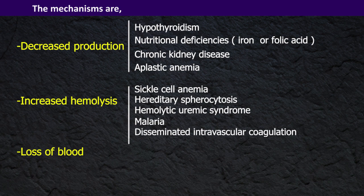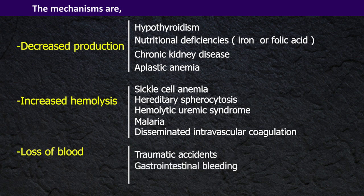Anemia due to loss of blood can be due to acute causes like traumatic accidents, or some long-standing causes like gastrointestinal bleeding or having heavy periods, which is known as menorrhagia.